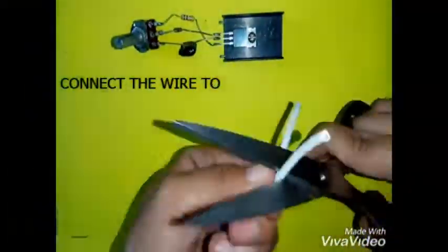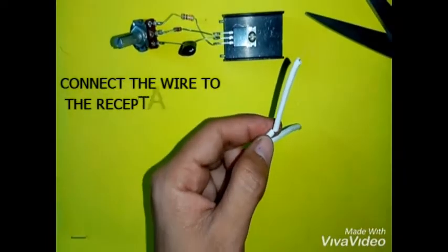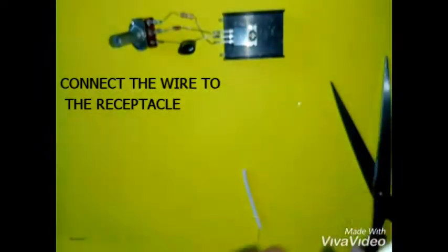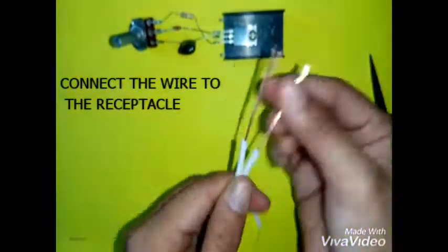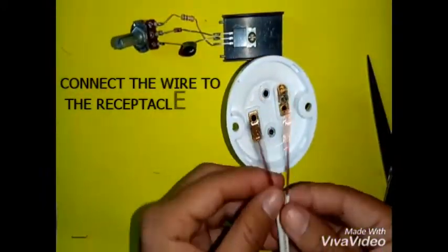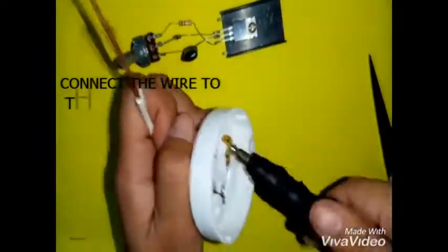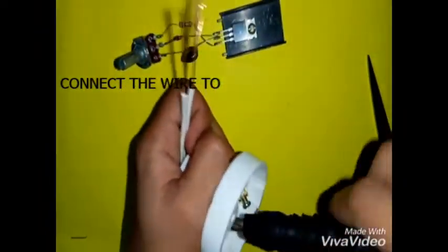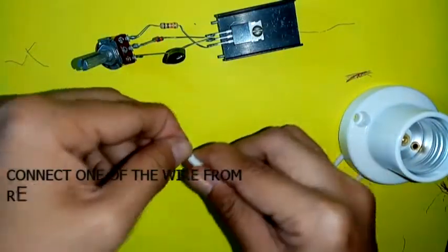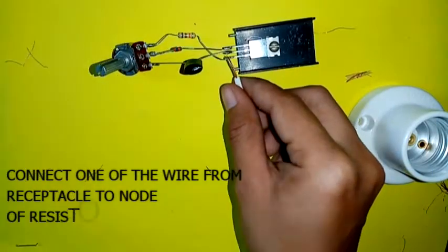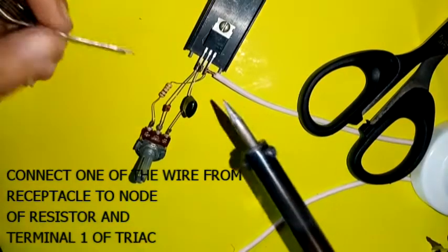Connect the wire to the receptacle. Connect one of the wires from the receptacle to the node of the resistor and Terminal 1 of the triac.